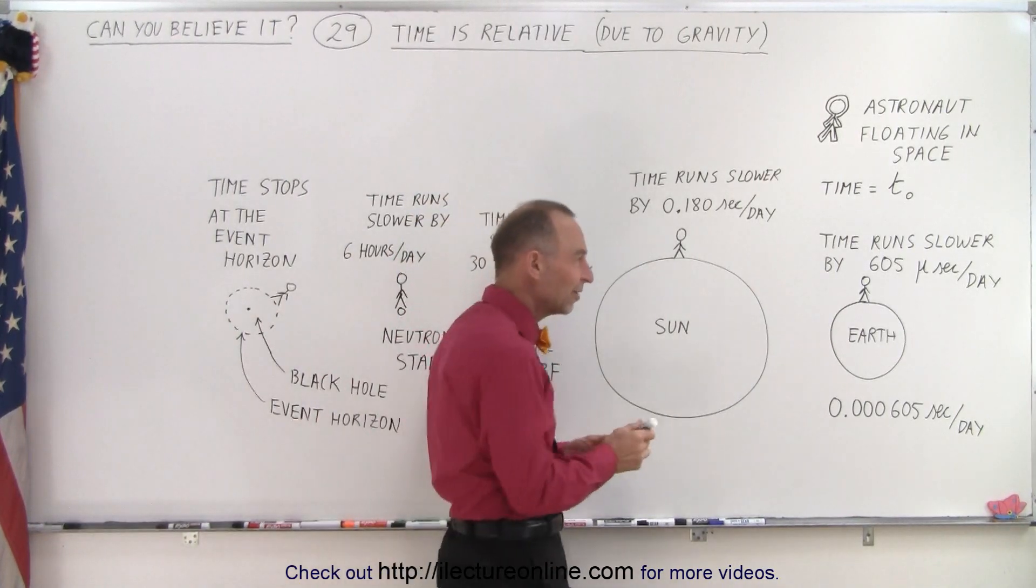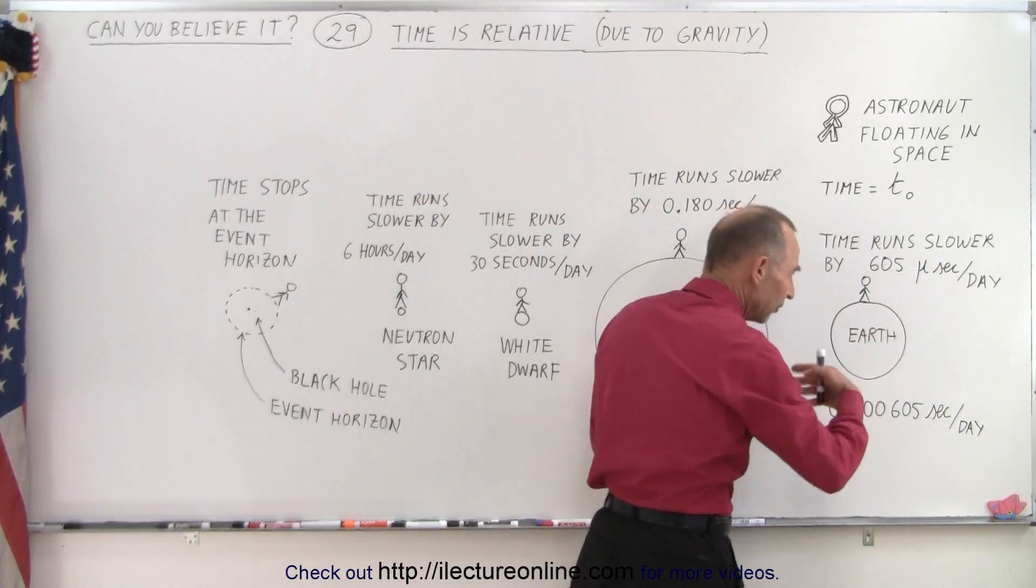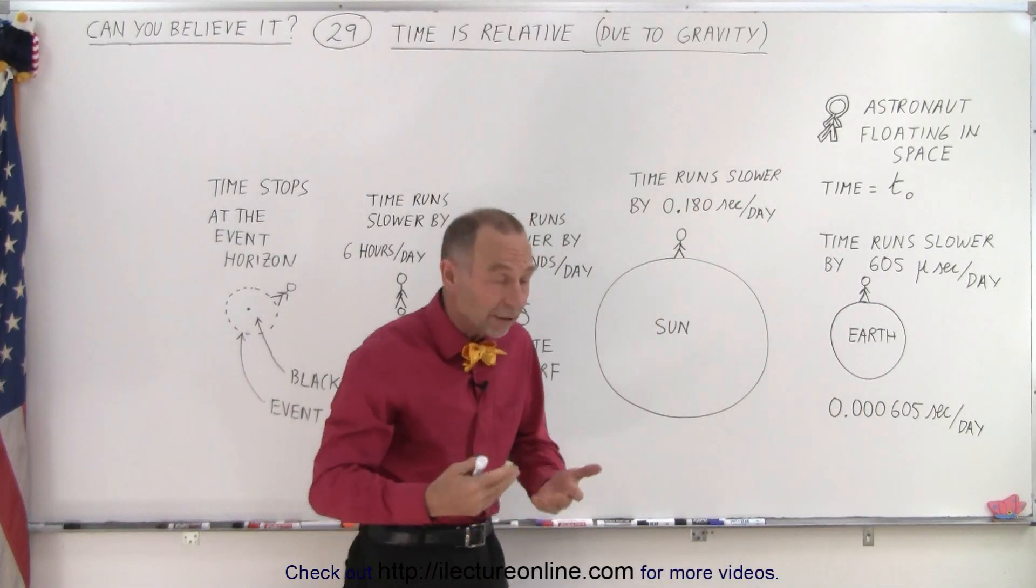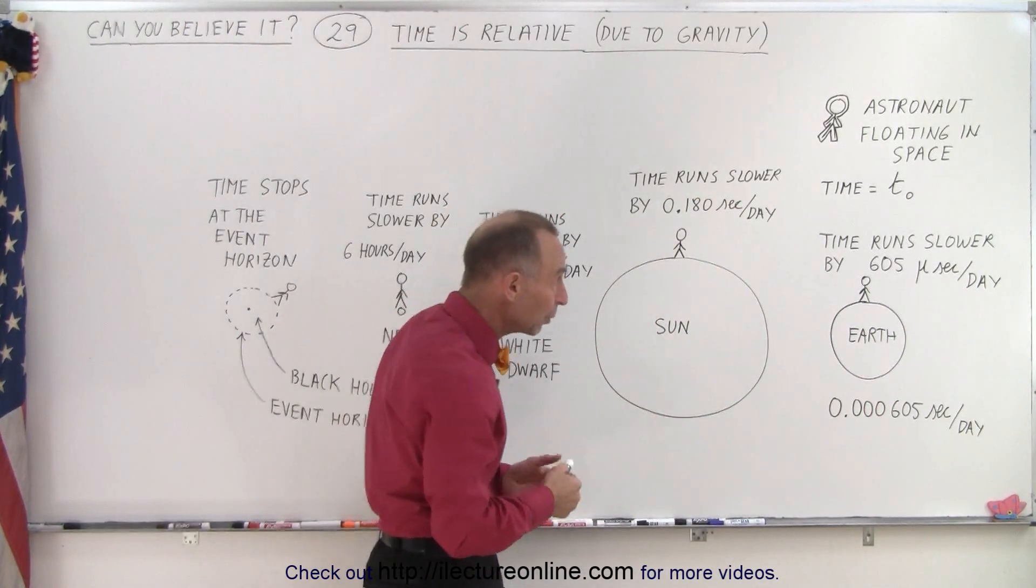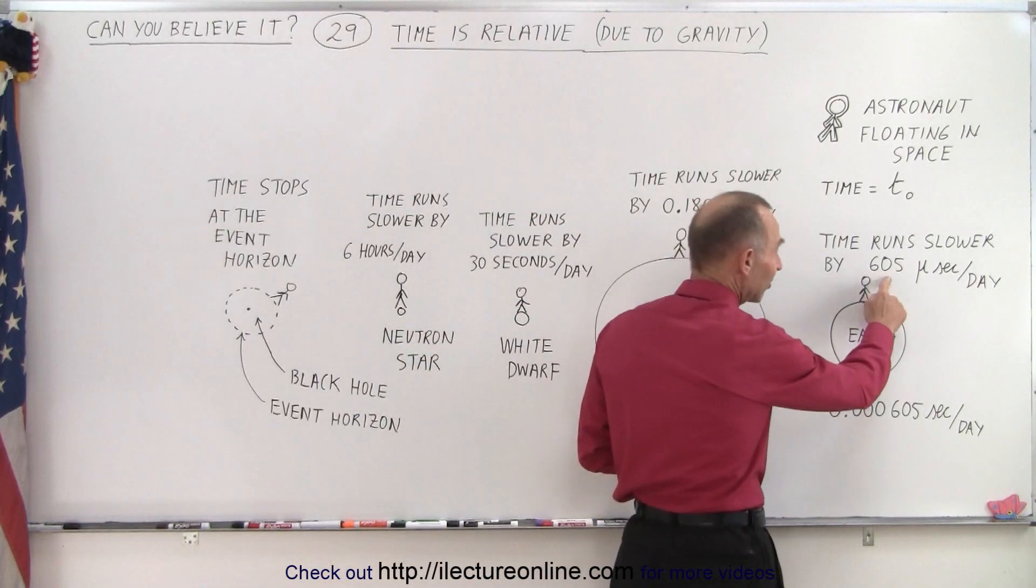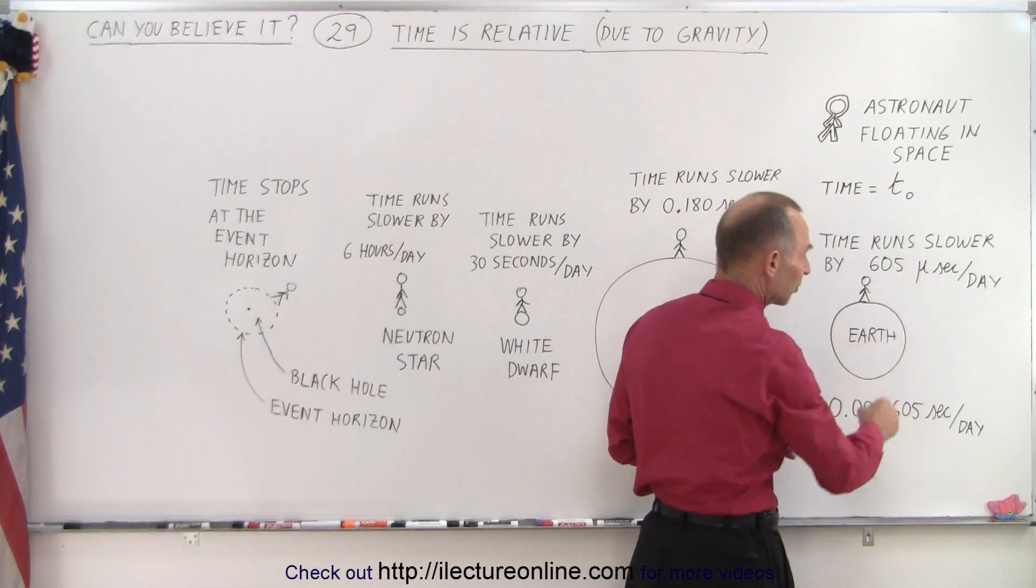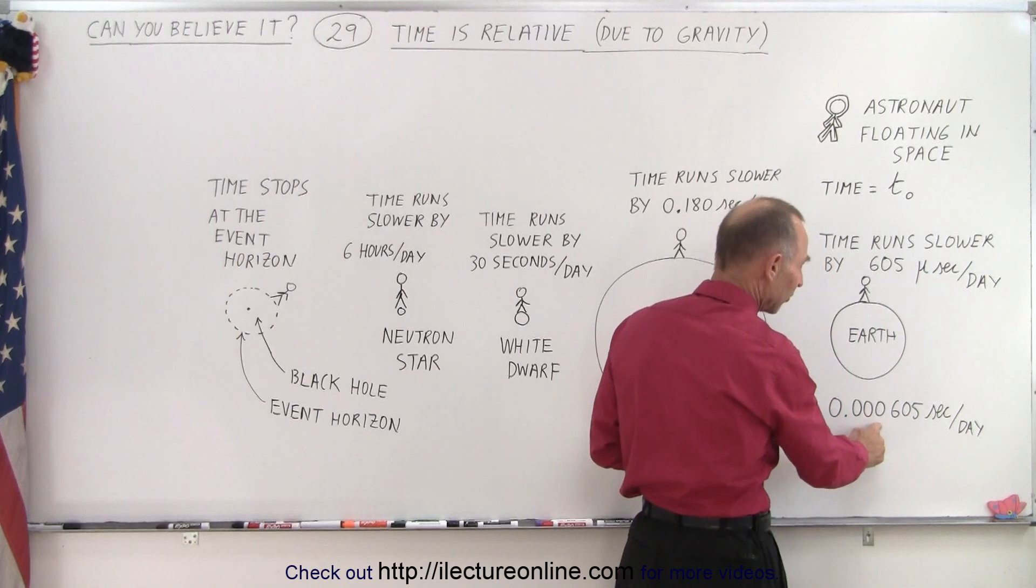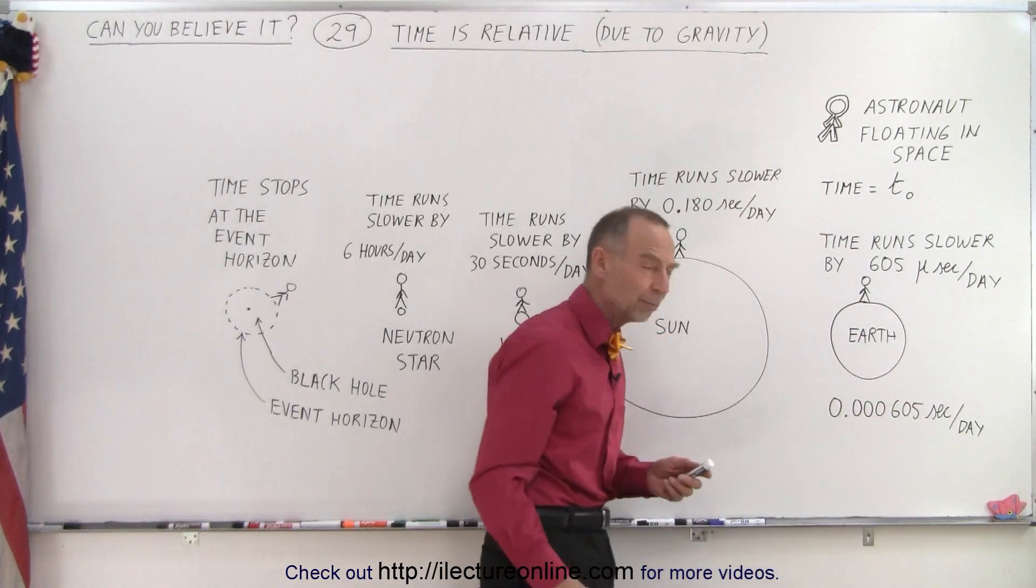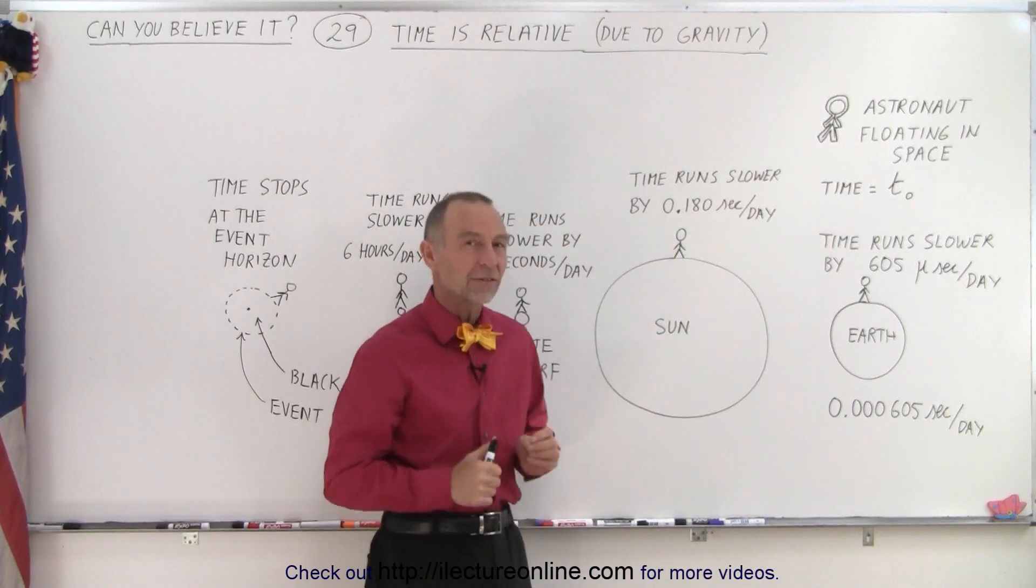But when we stand on the surface of the Earth, when we're under the gravitational force and influence of the Earth's gravity, well time will run slower by 605 microseconds per day. That's 0.000605 seconds per day. A little bit less than a millisecond.